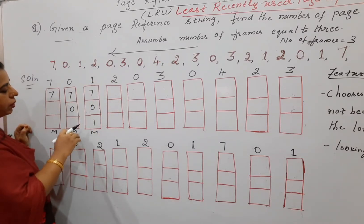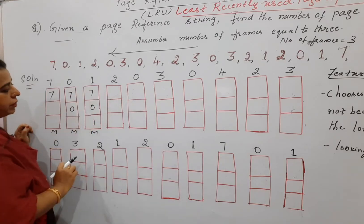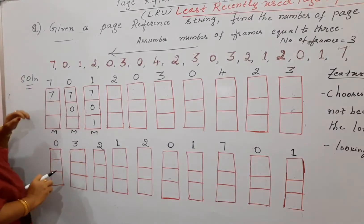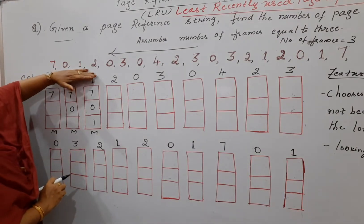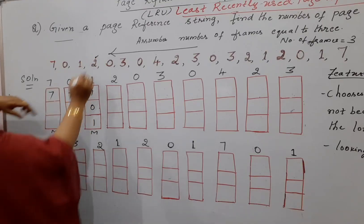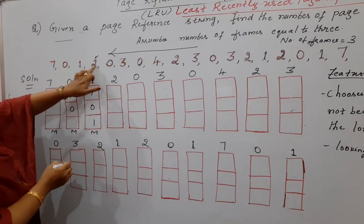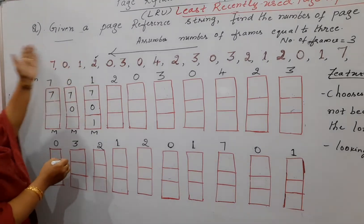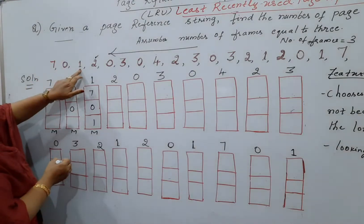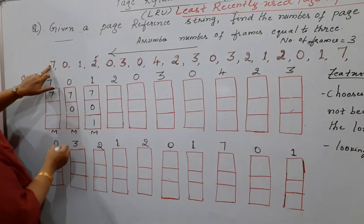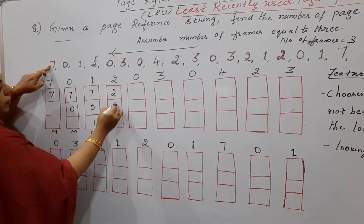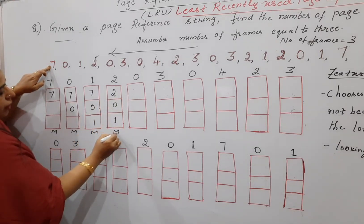You have to select a particular page to replace for the new page number, which is two. You must choose one out of seven, zero, and one currently in the frames. Looking backward in the reference string from the current position: one was used recently, zero was used after that, and seven was used long ago. So seven gets replaced. This is also a miss.